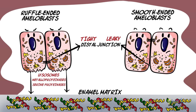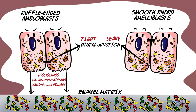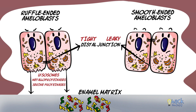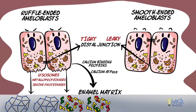Once the proteins degrade to small fragments of peptides, they escape and diffuse into ameloblasts via the leaky junctions of the smooth-ended ameloblasts. Ruffle-ended ameloblasts also show endocytic activity, which helps in endocytosis of the degraded peptides into the cell. When the enamel matrix is being degraded, calcium-binding proteins and calcium ATPases present in the ruffle-ended ameloblasts help in pumping calcium ions to the degrading enamel matrix to mineralize it and aid in active crystal growth, thereby fully forming enamel.